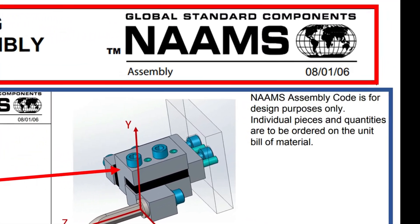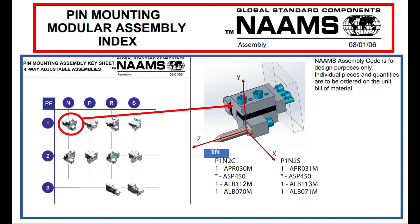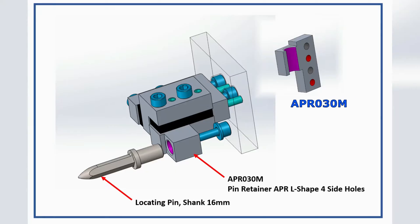All pin mounting modular NAMS assembly codes are for design purposes only. Individual pieces and quantities are to be ordered on the unit bill of material. NAMS also does not regulate quantities of spacer and shim. The customer defines spacer and shim quantities in their specifications and company standard.